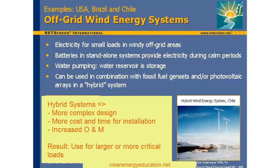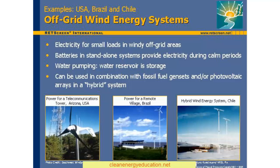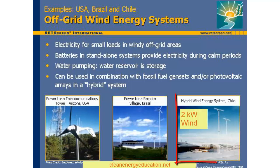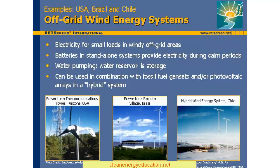Hybrid power systems are associated with a higher level of complexity, necessitating more careful design, more time for installation and commissioning, and more involved operation and maintenance. As a result, they tend to be used for larger or more crucial off-grid loads. Three small off-grid wind turbine applications are shown on this slide. The one on the left is a 400-watt turbine providing power for telecommunications equipment in Arizona, USA. In the center, a hybrid power system provides power to an off-grid village on the island of Marajo along the north coast of Brazil; this hybrid system includes 50 kilowatts of wind and photovoltaic capacity, as well as a battery bank. The photo on the right shows two 1-kilowatt turbines that charge batteries for a remote school at Villa Tejuelche in Puente Ravines, Chile.